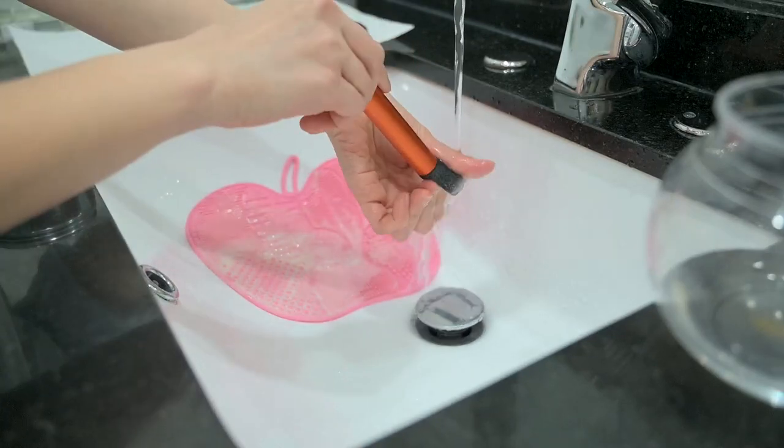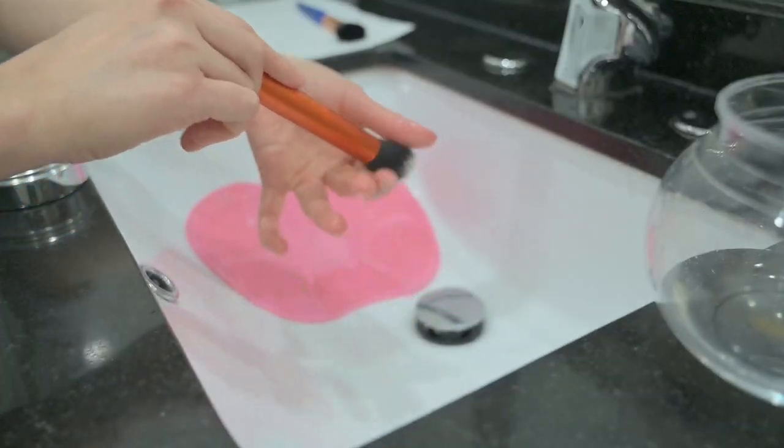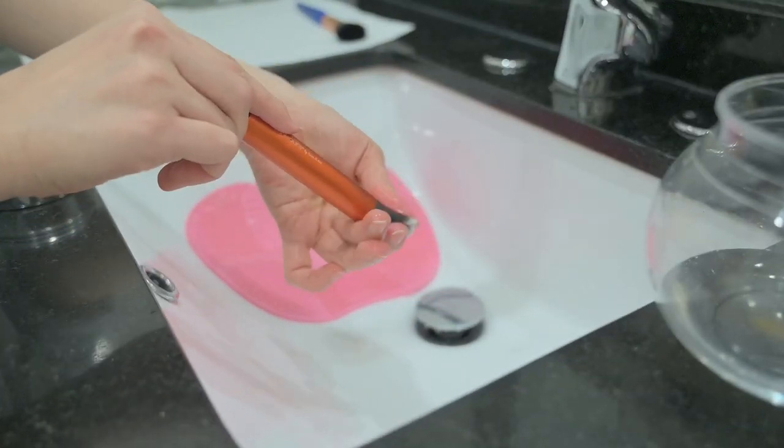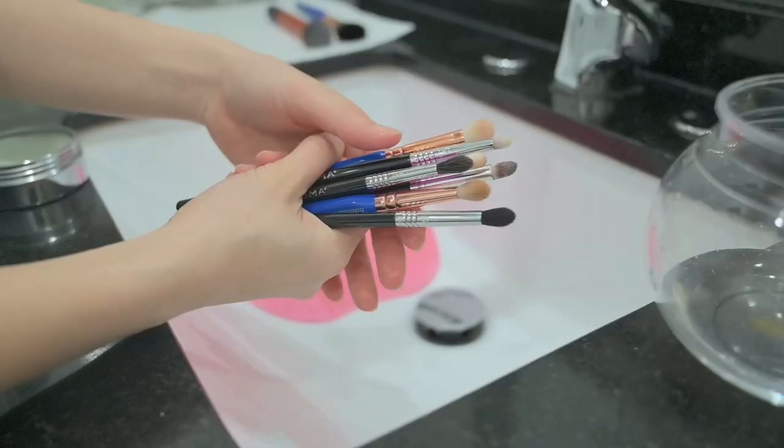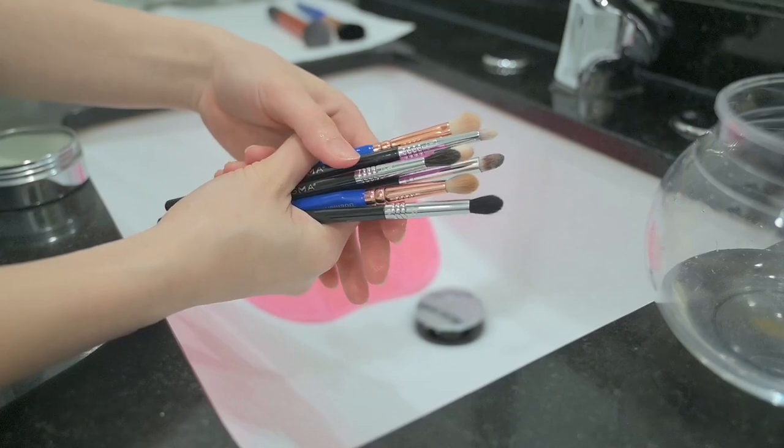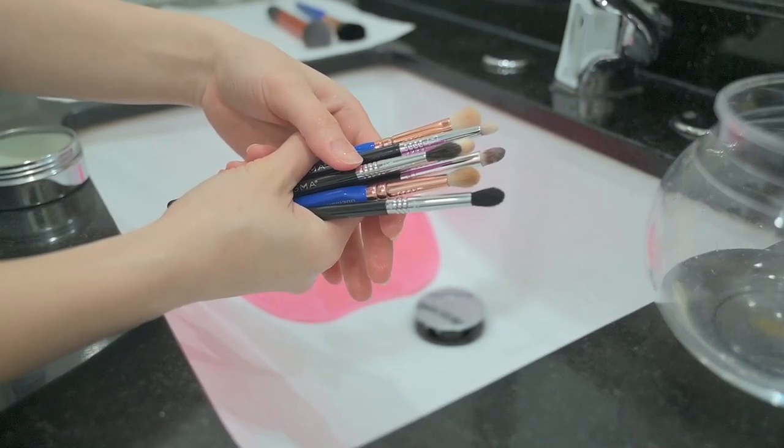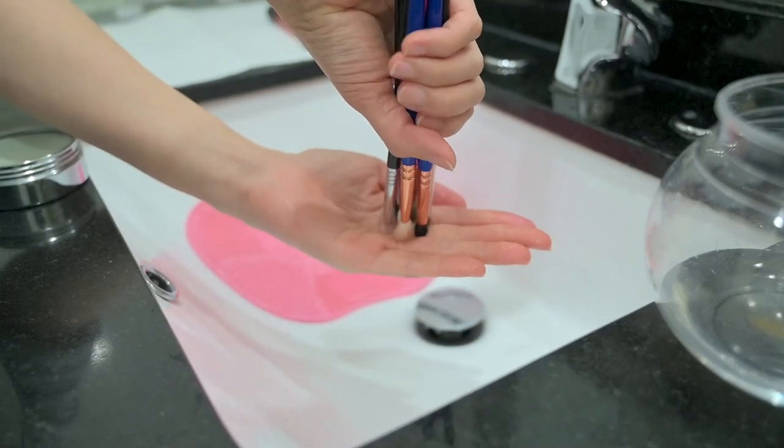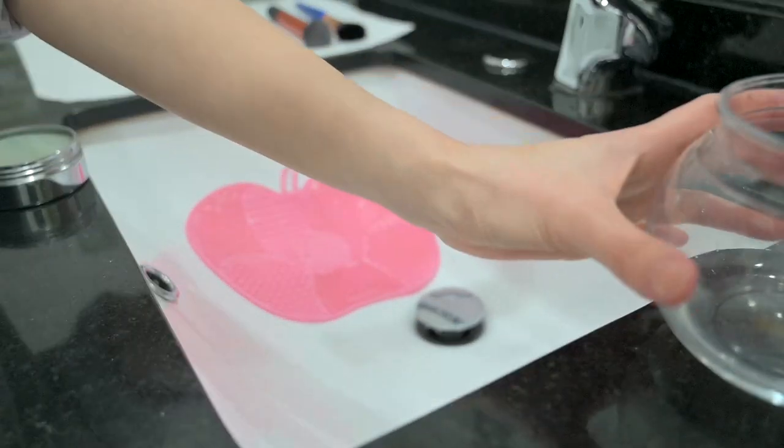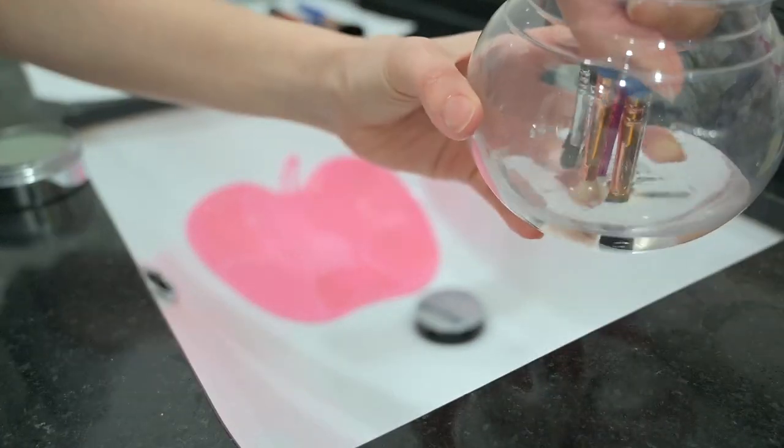I keep holding the brush pointing downwards, not upwards while cleaning. For smaller size brushes, I normally grab a handful of them and clean them together. By doing this, it saves me a lot of time then cleaning them individually. I make sure to get them all to the same level, then I do the same process as before.